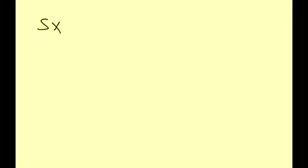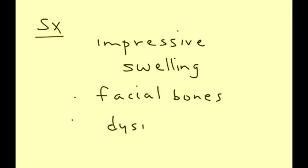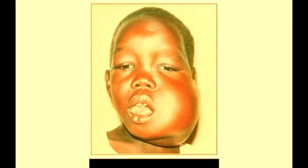In terms of symptoms and presentation, there will be a very impressive swelling in the facial region, in particular the facial bones and the cheek area. The patient will have a lot of pain and difficulty breathing. Here is a photo of a child with Burkitt's lymphoma, and as you can see, there's a very impressive swelling in that facial area.